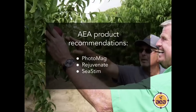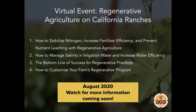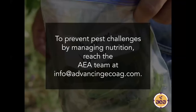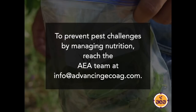The products we have put together which contain these nutrients and produce this spider mite resistance response — by changing ammonium levels and the plant nitrogen profile — are Photomag, Rejuvenate, and C-Stim. We also have an upcoming online course in August specifically focused on California agriculture, covering dry land, irrigated fruit and vegetable production. If you have follow-up questions or want to dig deeper into protocols for your operation, feel free to reach out to the Advancing Eco Agriculture team at info@advancingecoag.com.